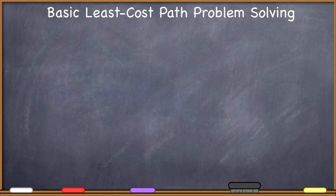We don't have time to go over all of these different kinds of questions in detail in this introduction, but let's take a look at a basic least cost path problem solving, because this is the kind of problem solving that Google does when you go and search Google Maps. We're looking for directions from A to B — basically we're looking at the least cost path between A and B. That's what it's called in a more technical sense.